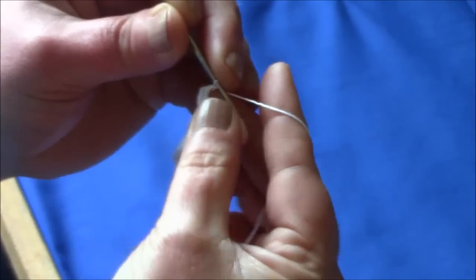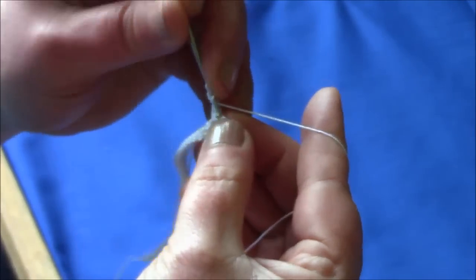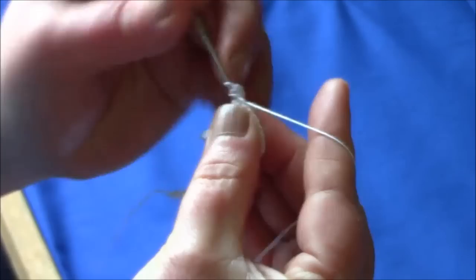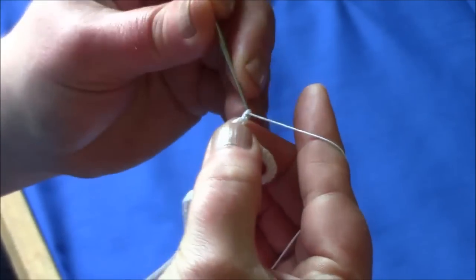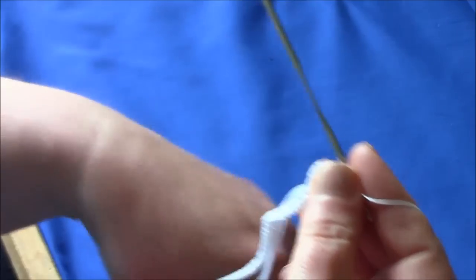Chain 1, 1 double crochet, and so round the ring.